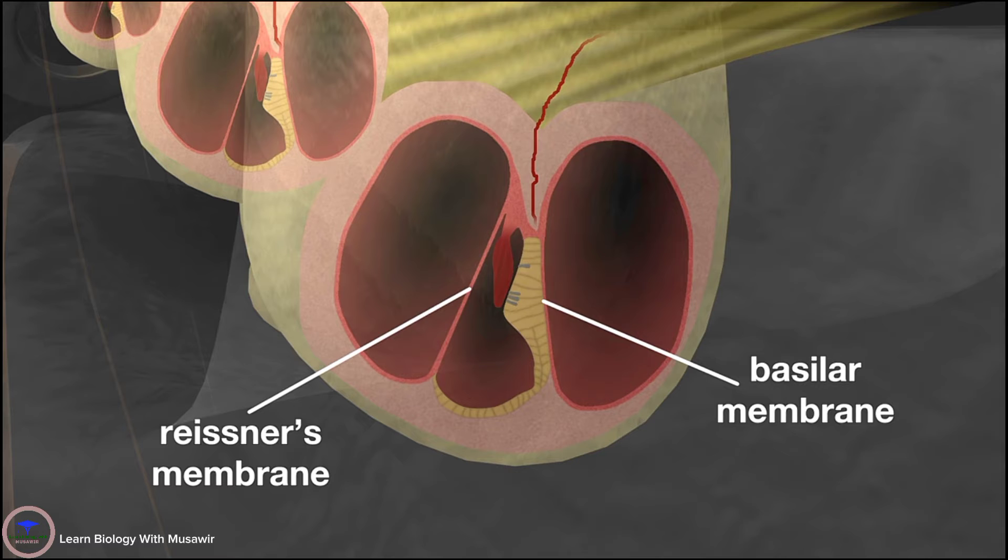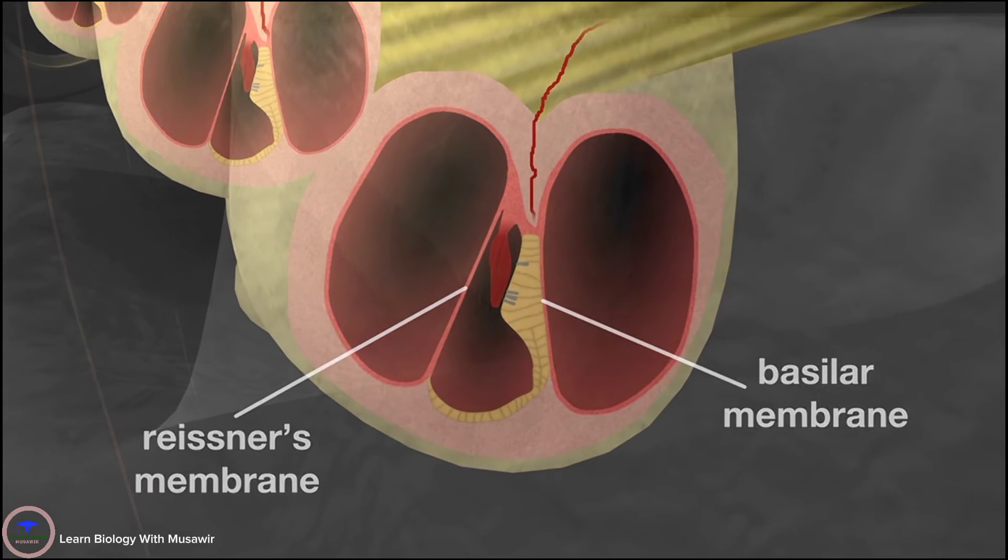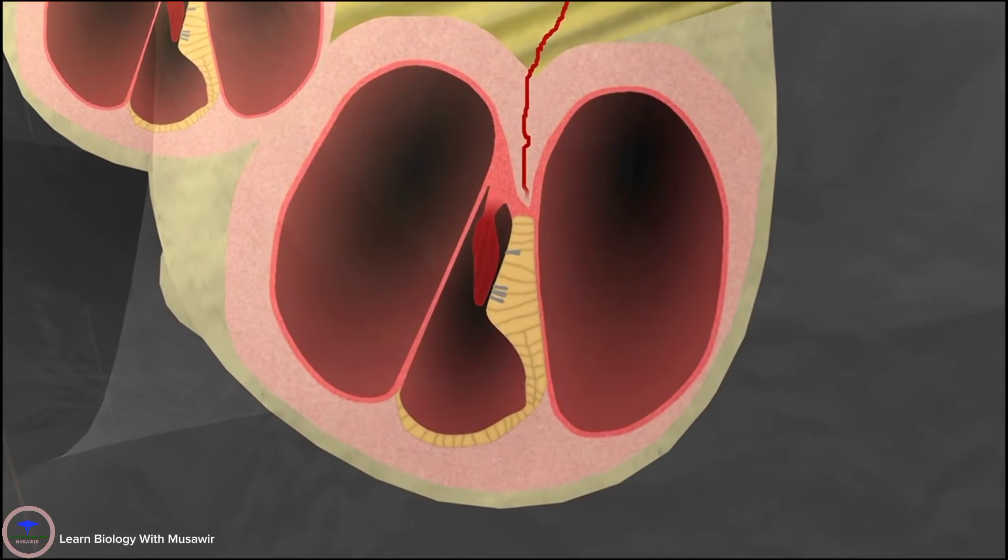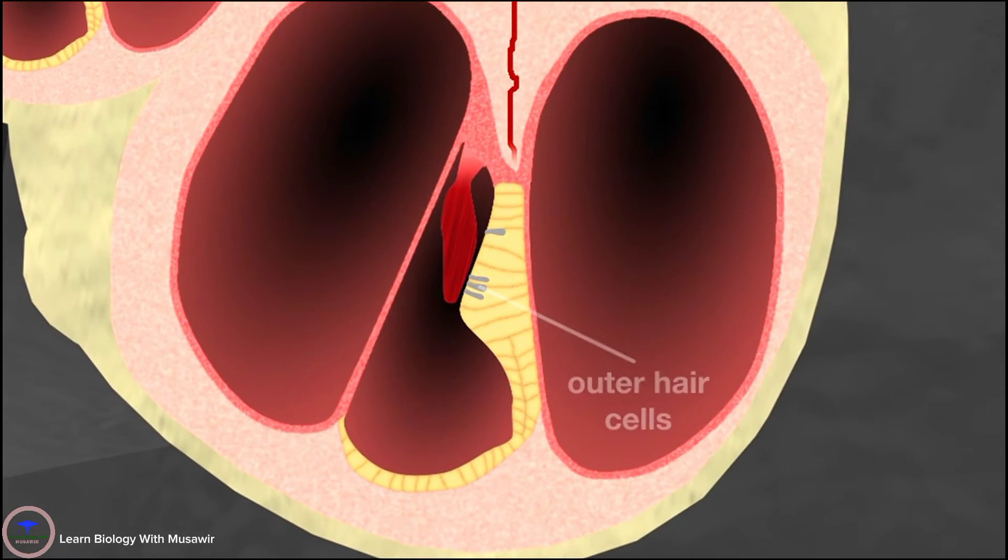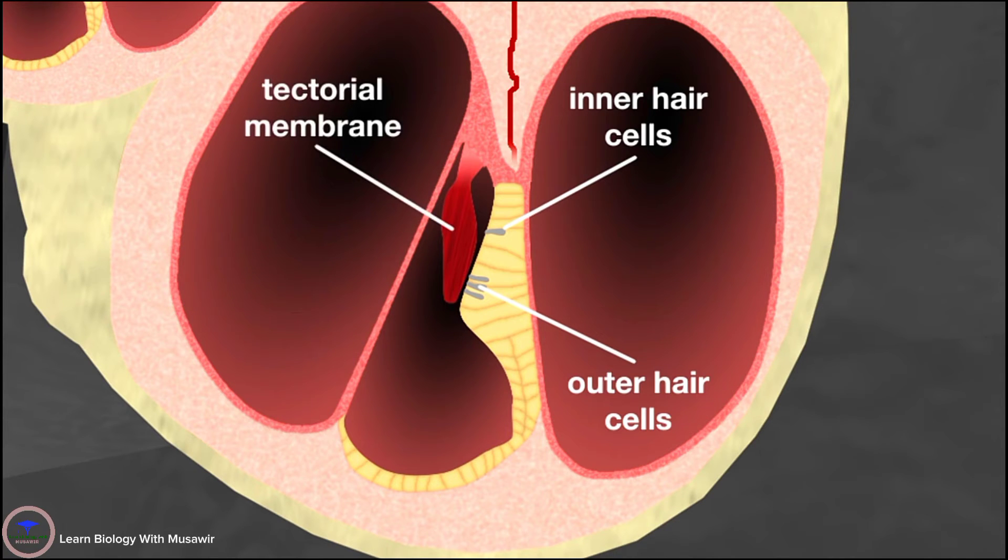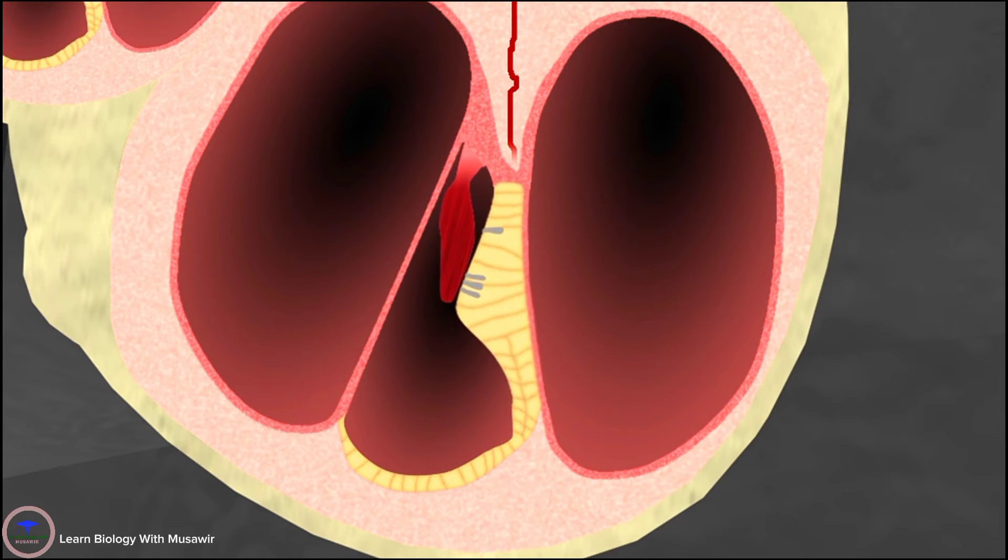Along the basilar membrane are two types of sensory cells or hair cells called the outer and inner hair cells. These are arranged in rows according to the frequency or pitch of sound they detect, and are covered by the tectorial membrane. Each hair cell has tiny hair-like projections called stereocilia attached to them.